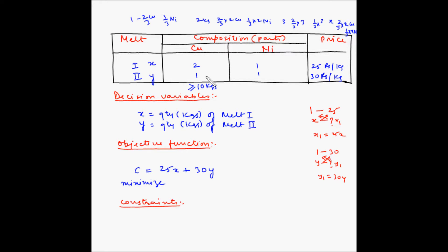Similarly, the quantity of copper for y kgs of melt two is (1/2)y, because copper is 1 out of every two parts. So for 1 kg of melt two, copper is 1/2 kg. For x kgs of melt one the copper is (2/3)x, and for y kgs of melt two the copper is (1/2)y.